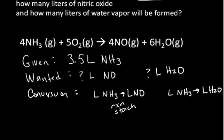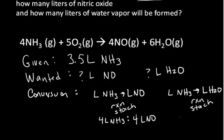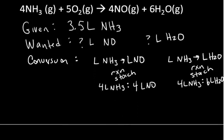From the reaction stoichiometry, for every four liters of ammonia used we form four liters of nitric oxide. For the conversion to water vapor, looking at the balanced chemical equation, for every four liters of ammonia used we make six liters of water vapor. Now we have everything we need to solve this problem.